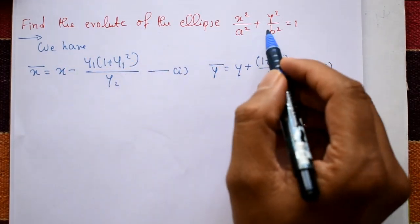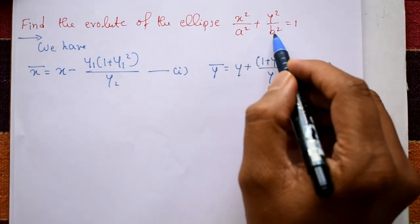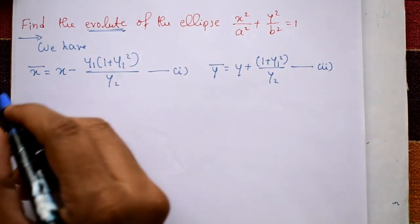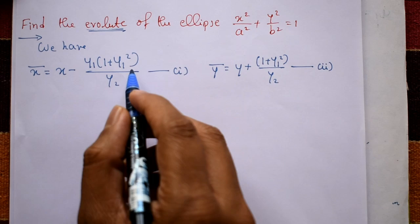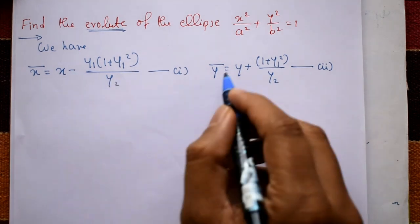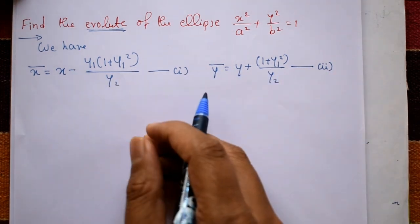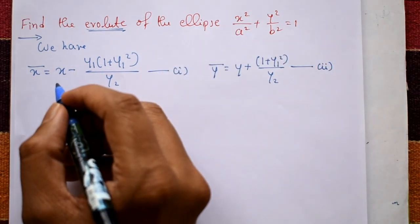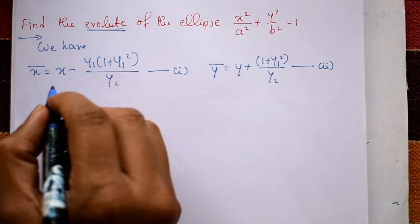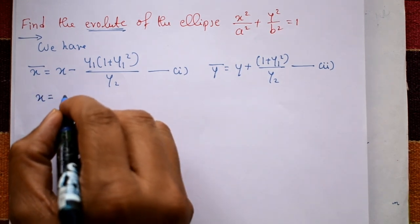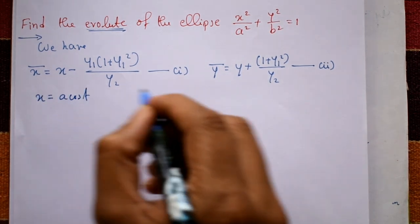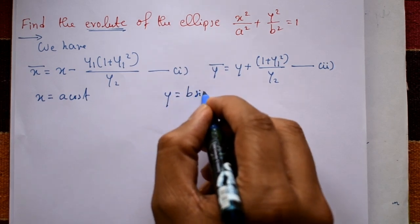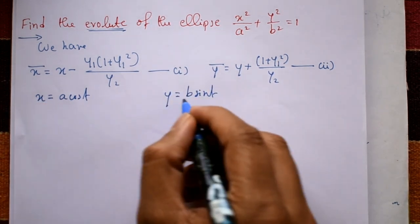Find the evolute of the ellipse x squared by a squared plus y squared by b squared is equal to 1. We have the x̄ equation as equation number 1 and ȳ as equation number 2. For the ellipse, we consider the parametric form: x is equal to a·cos(t) and y is equal to b·sin(t).